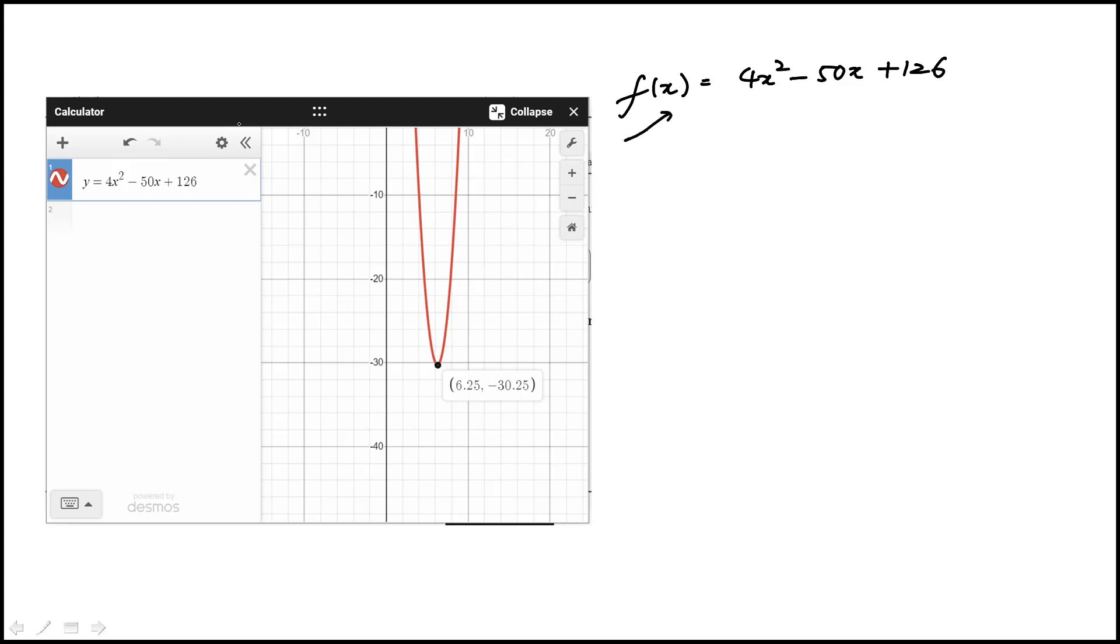So the easiest way to do this is to just use the calculator, the on-screen calculator. You put in this function y equal to graph it, and then identify, click on the minima, and that gives you the x value.